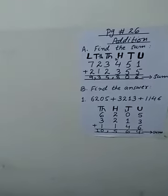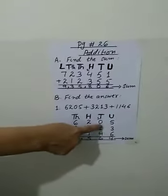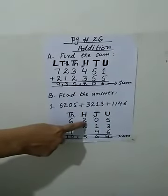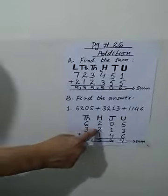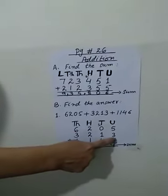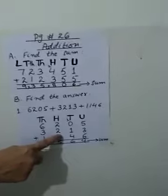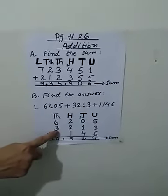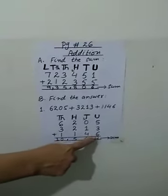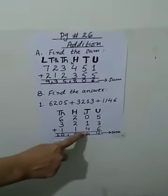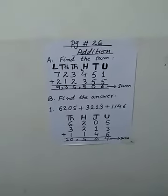Figure number 1: 5 is at unit place, 0 at tens place, 2 at hundreds place, and 6 at thousands place. Figure number 2: 3 at unit place, 1 at tens place, 2 at hundreds place, 3 at thousands place. And the third figure is: 6 at unit place, 4 at tens place, 1 at hundreds place, and 1 at thousands place.